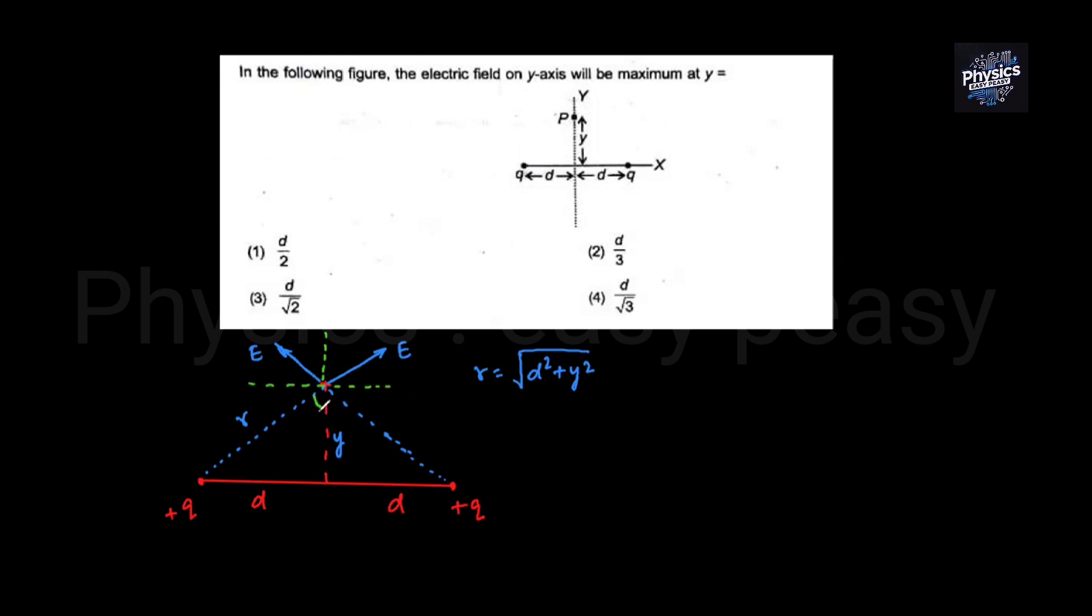If we understand that this angle is theta, then this angle will also be theta. This E has a component in this direction E cos theta. This direction is E sine theta. We can see that the x-directional components are E cos theta in opposite directions.